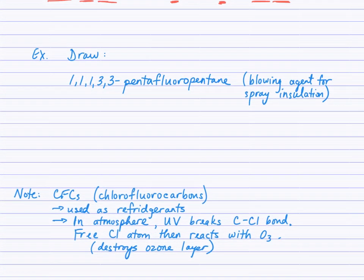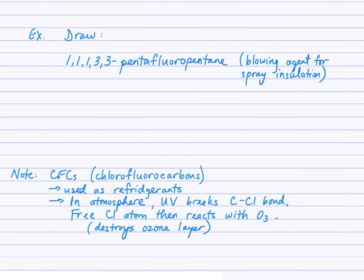The next example, I'm asking you to draw 1,1,1,3,3-pentafluoropentane. This is actually used as a blowing agent for spray insulation. So go ahead and draw that, and then check your answer on the video. So we see the pentane, which tells us five carbons.